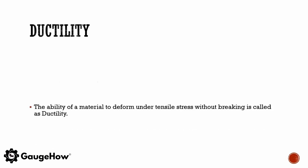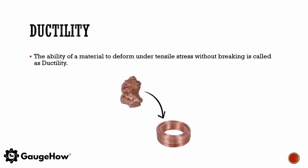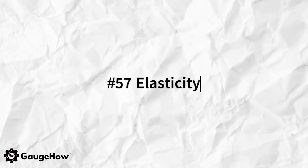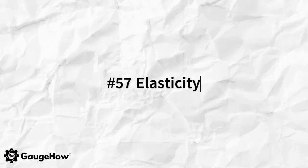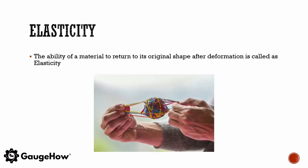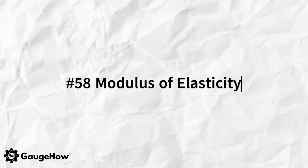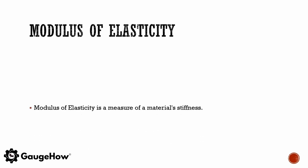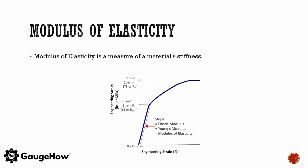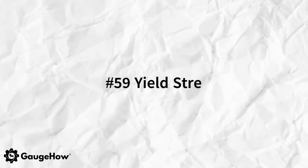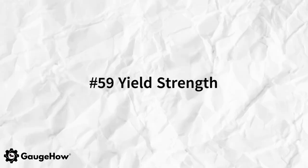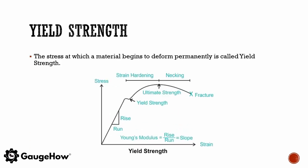The ability of a material to deform under tensile stress without breaking is called ductility. The ability of a material to return to its original shape after deformation is called elasticity. The modulus of elasticity is a measure of a material's stiffness. The stress at which a material begins to deform permanently is called yield strength.